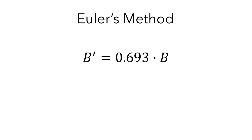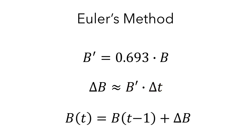To summarize, Euler's method is a technique for approximating the value of a quantity using a differential equation. In our example, we were given the relationship between the rate of change of the number of bacteria and the number of bacteria present. We used this with the central relationship that allowed us to approximate the amount of change in the number of bacteria based on the rate of change and the amount of change in time. Then, when we wanted to know the number of bacteria at a given number of hours after they were introduced, we would start with the number of bacteria present one hour before and add the amount by which the number of bacteria changed.